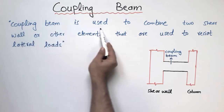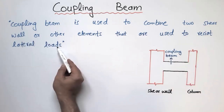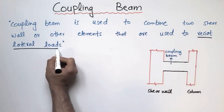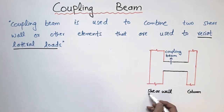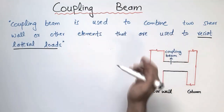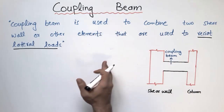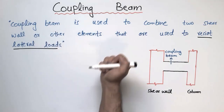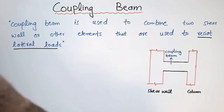A coupling beam is used to combine two shear walls or other elements that are used to resist lateral loads. The coupling beam mostly connects two structural members — it may be either a shear wall and a column, two shear walls, or two columns — because shear walls and columns can be designed as earthquake-resistant structural members.